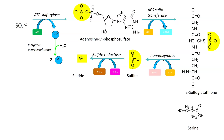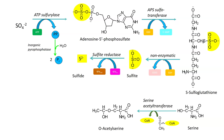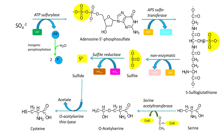You can have serine and a serine acetyltransferase bringing in an acetyl group off of the acetyl-CoA, which gives you acetylserine. That will then pick up the sulfide, releasing an acetate with an enzyme that is orthoacetylserine thiolysase. This gives you cysteine — so we've gone from serine to cysteine. Now we've got the sulfur on an amino acid residue, which is going to be important in the metabolic pathway.